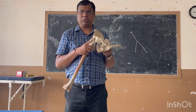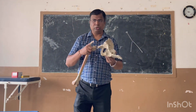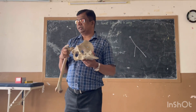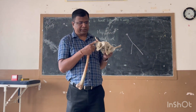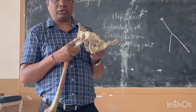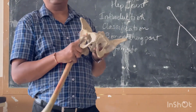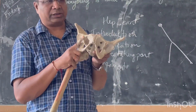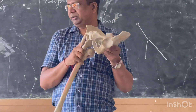The next ligament is the transverse acetabular ligament. The acetabulum is not a complete circle — there is a notch called the acetabular notch. This notch is bridged by the transverse acetabular ligament, similar to how the intertubercular sulcus bridges the greater and lesser tubercles in the humerus.